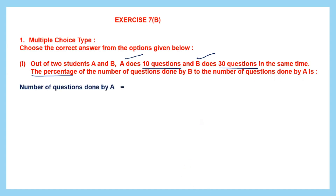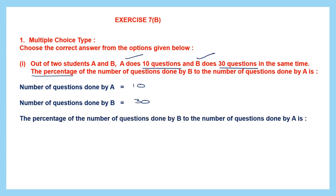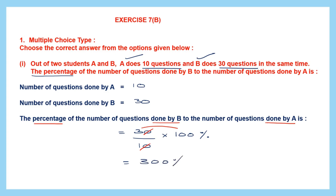What's given to us: number of questions done by A is 10, and number of questions done by B is 30. Since B comes first, we write 30 over 10 and multiply by 100%. Cancelling the zeros and multiplying, 3 into 100% gives us 300%. So the answer is 300%, which is option B.